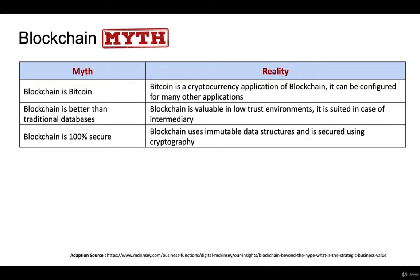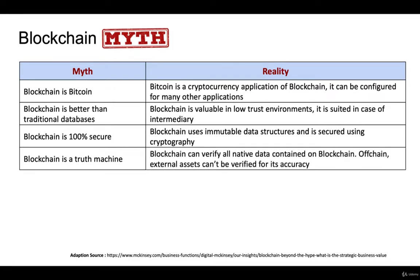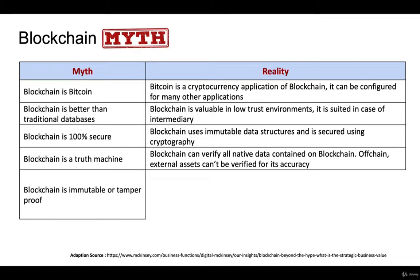Is blockchain a truth machine? Not entirely — blockchain can verify all the native data contained within it, so whatever is stored in each block can be verified. However, off-chain external assets cannot be verified because they are not stored in the blockchain. When you put data into the blockchain you validate it before storing, so for data within the blocks, it does act as a truth machine.